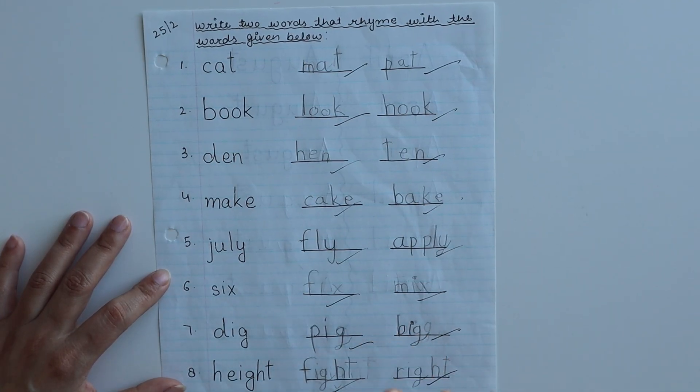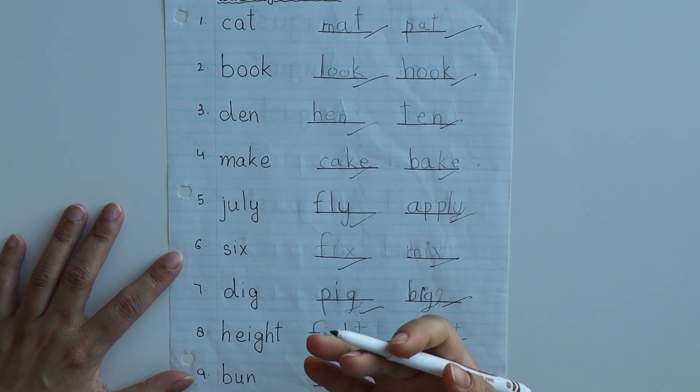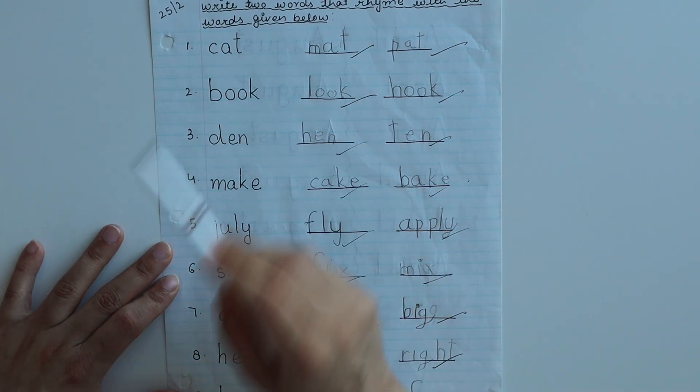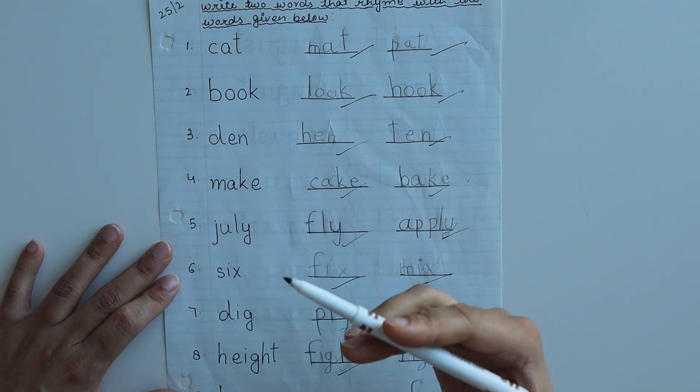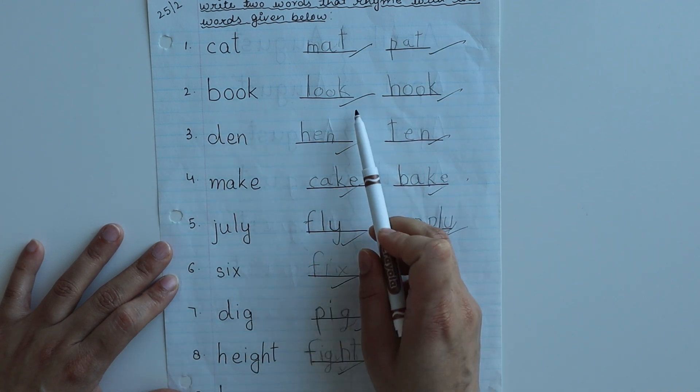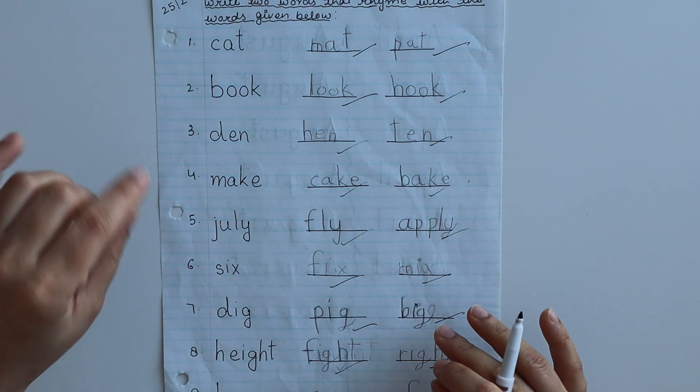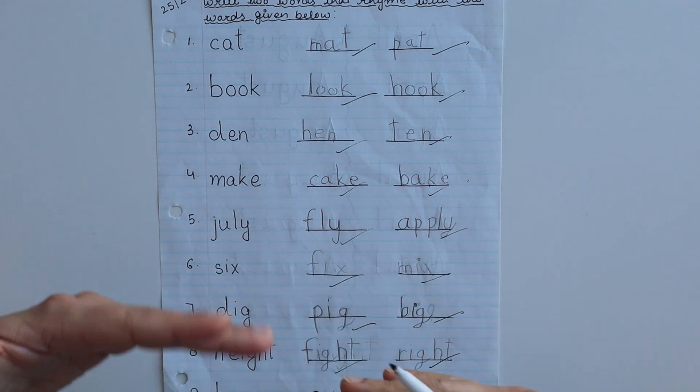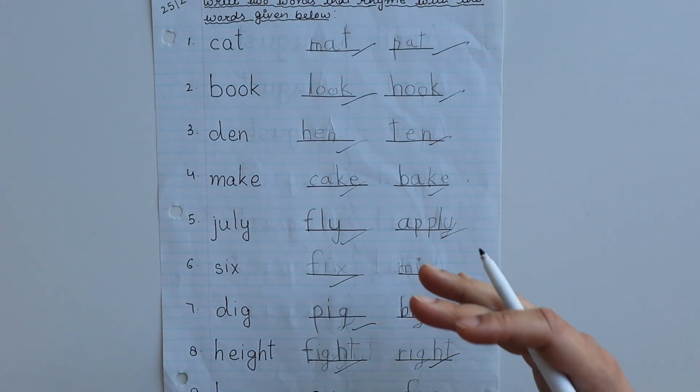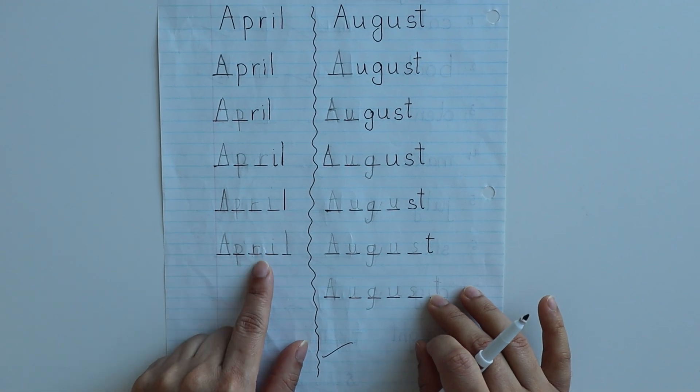Write two words that rhyme with the words given below. You can see some random words given to the child. For example, cat: write two words like mat and pat. Book: look, hook. Den: hen, ten. Rhyming words are very good because if the child learns one spelling, they can learn two or three more words. This strengthens vocabulary.